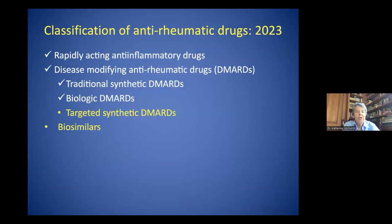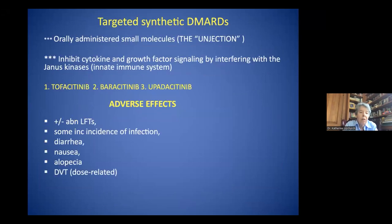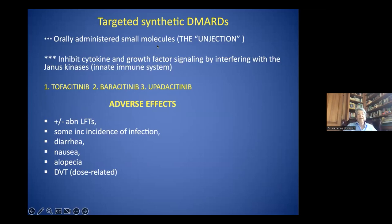We also use drugs that are targeted synthetic DMARDs — the JAK inhibitors such as tofacitinib, baricitinib, and upadacitinib. These drugs are given orally and are associated with DVT in addition to diarrhea, nausea, and alopecia. They are orally administered small molecules — cleverly marketed as the 'unjection.' They are very helpful in certain patients, and the DVT risk is dose-related.